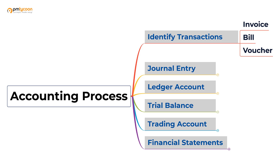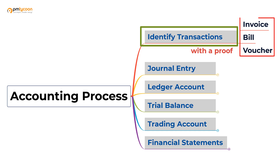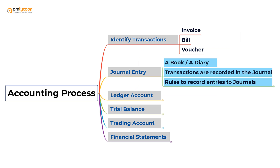The very first step in accounting starts with identifying a transaction with proof. If you sell or buy something, you need some sort of proof, like an invoice for things you bought or a bill or voucher for items you've sold. This proof is also called a source document, and it becomes the starting point for our accounting process.